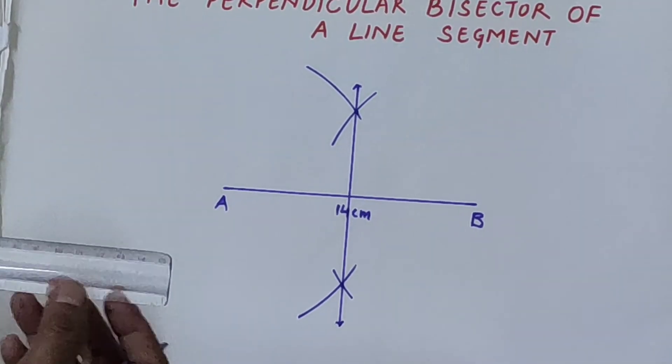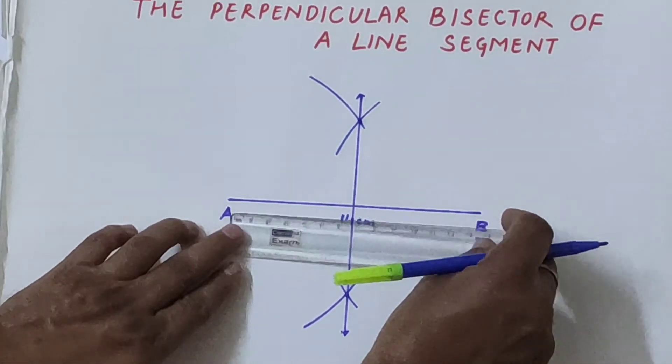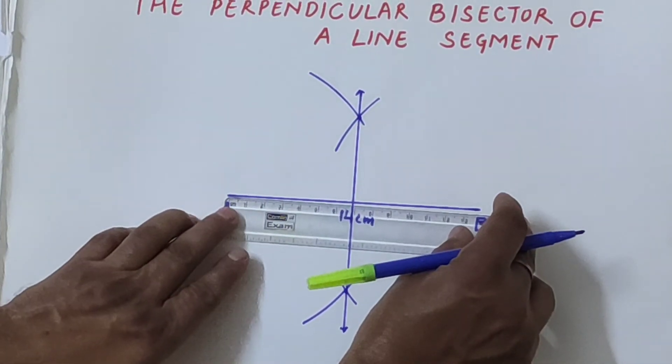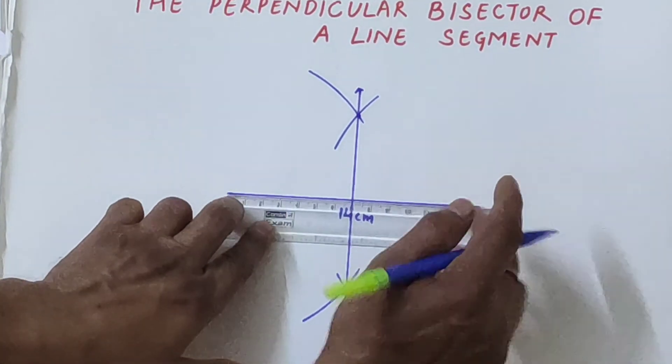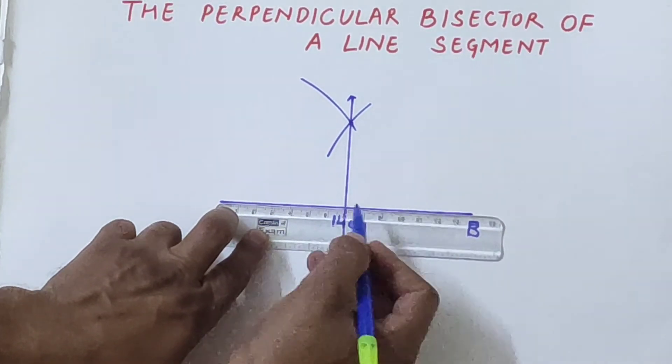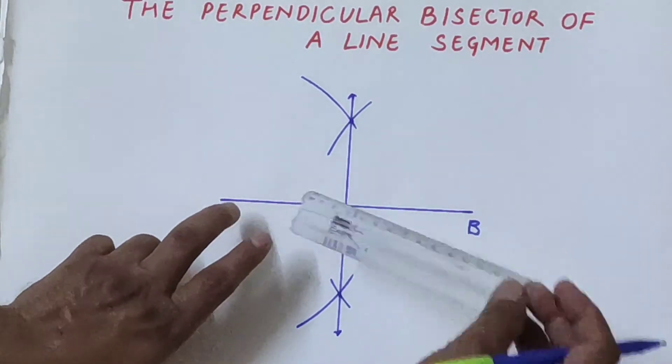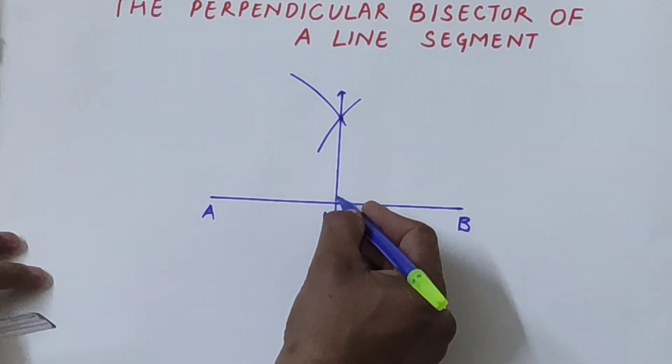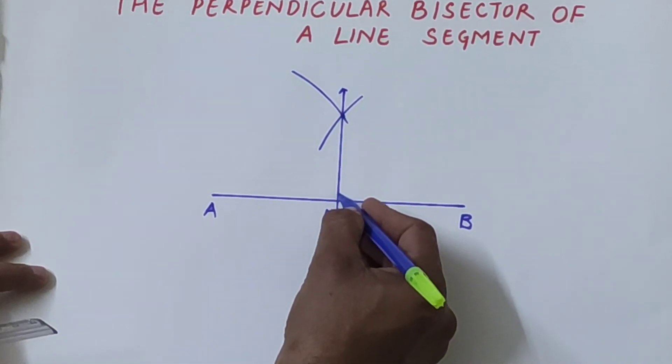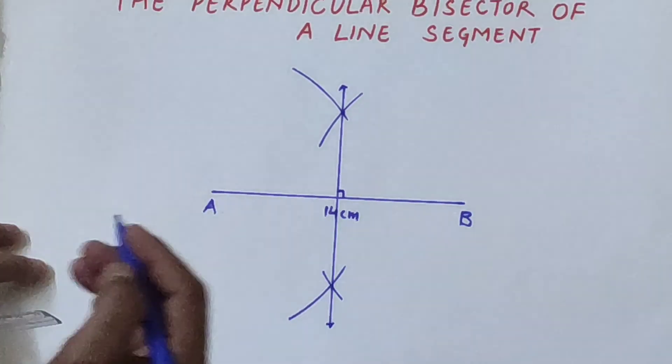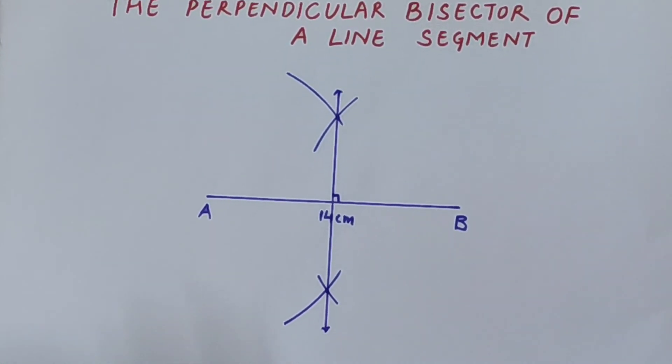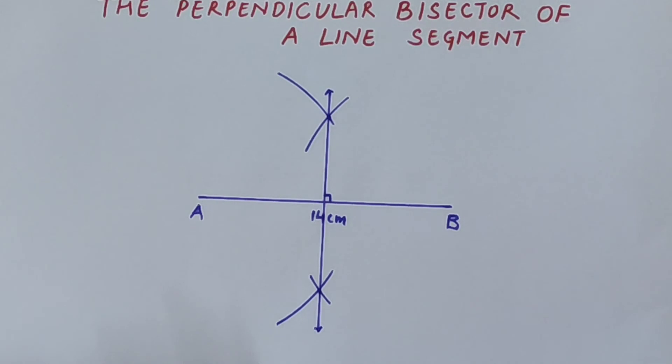You can see that it divides AB into equal parts. The length of one part is 7 centimeters. So 14 is divided into two parts, and you can see this line forms a right angle. That is why this line is called the perpendicular bisector of the given segment.